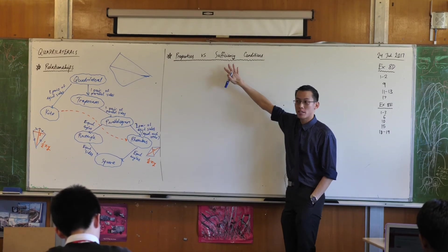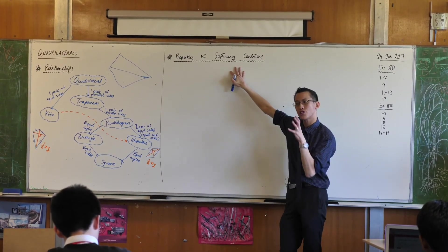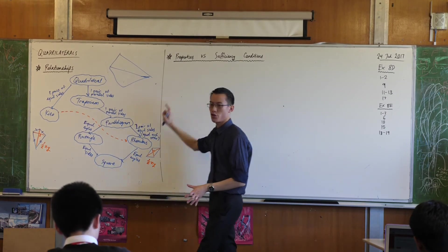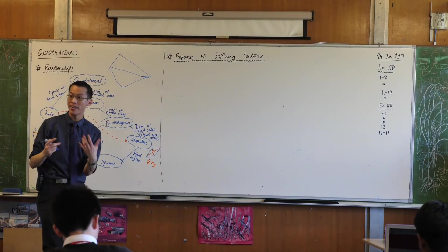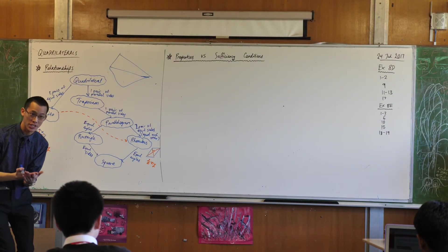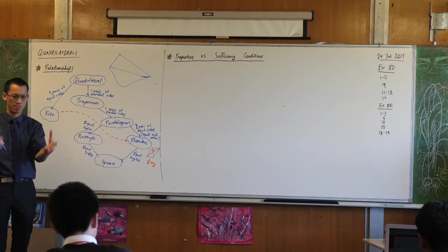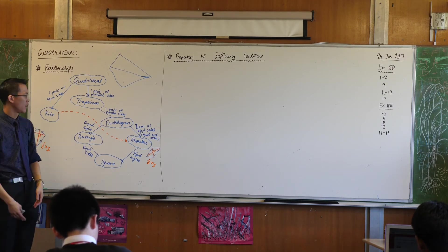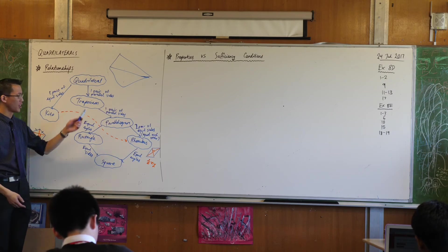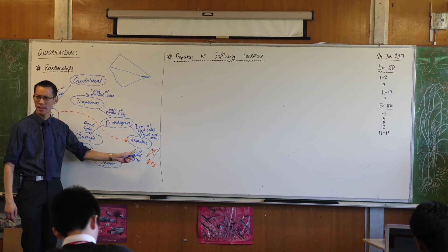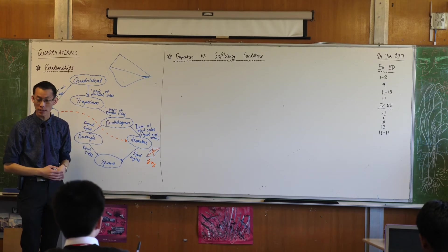That also happens to be one of its sufficiency conditions. So if you have a shape and you don't know what it is, but you've proved that all of its sides are equal, then that is sufficient as a condition to say, this must be a rhombus. It can't be anything else. It can't be just a trapezium. It has to be more special than that because you've proven all of these extra things.